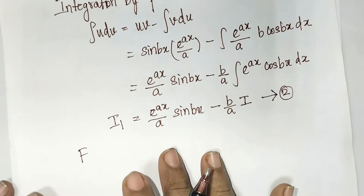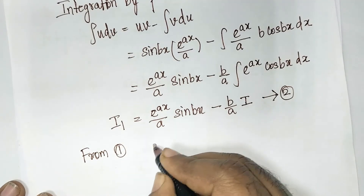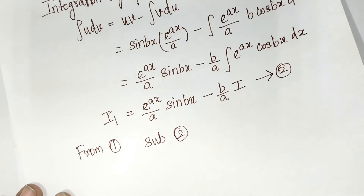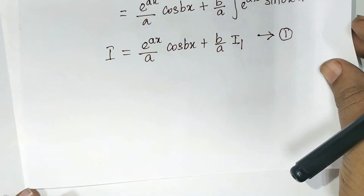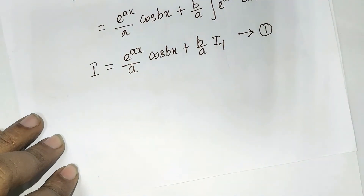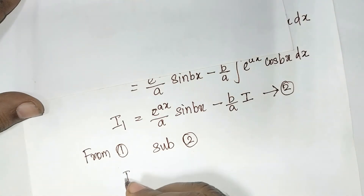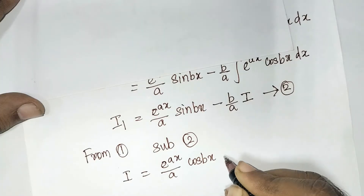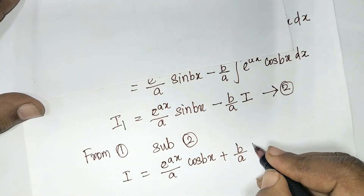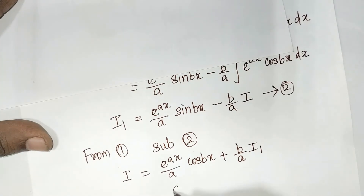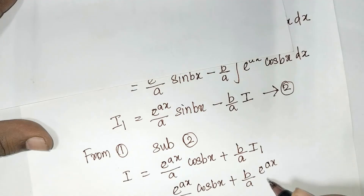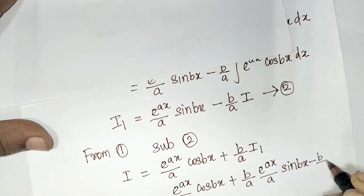From equation 1, I = e^(ax)/a · cos(bx) + (b/a)·I₁. Now I substitute the value of I₁ from equation 2 into equation 1. So I = e^(ax)/a · cos(bx) + (b/a) · [e^(ax)/a · sin(bx) - (b/a)·I].